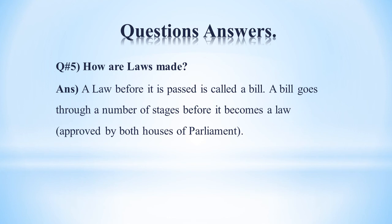Question number five: How are laws made? Answer: A law before it is passed is called a bill. A bill goes through a number of stages before it becomes a law, approved by both houses of parliament.